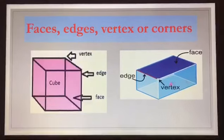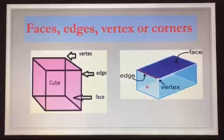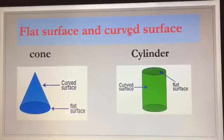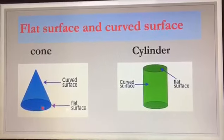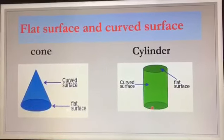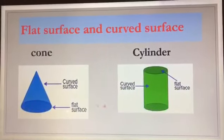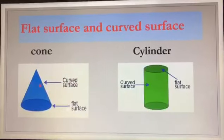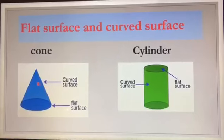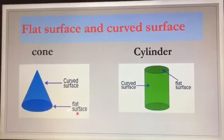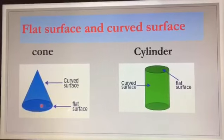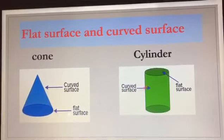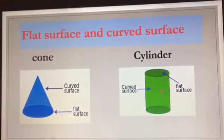Now let's talk about the flat surface and the curved surface. Here we have the cone shape and here we have the cylinder shape. For the cone, this part is called the curved surface, and this part is called the flat surface. For the cylinder, this part is called the curved surface.